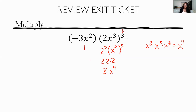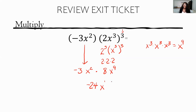Everything from the first parenthesis comes straight down: we have negative 3 and x squared. Multiplying the coefficients: negative 3 times 8 gives me negative 24. Then x squared times x to the 9th — since we're multiplying, we add the exponents, giving an exponent of 11. So the final answer is negative 24x to the 11th.